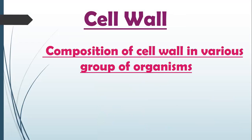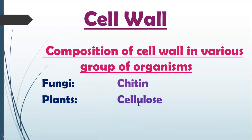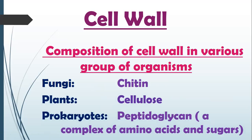Now let's discuss the composition of the cell wall in various groups of organisms. In fungi, the cell wall is made up of chitin. In plants, cellulose is present. In prokaryotes, peptidoglycan is present — a complex of amino acids and sugars, meaning it is made of protein and carbohydrates. So: fungi have chitin, plants have cellulose, prokaryotes have peptidoglycan.